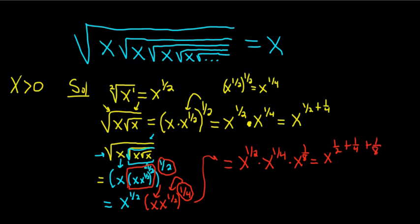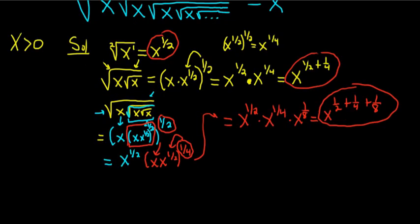So now you can start to see the pattern. The first one you get is 1 half, so we have x to the 1 half. The second one you get is x to the 1 half plus 1 fourth. The third one you get is x to the 1 half plus 1 fourth plus 1 eighth. Let's go ahead and rewrite what we have.